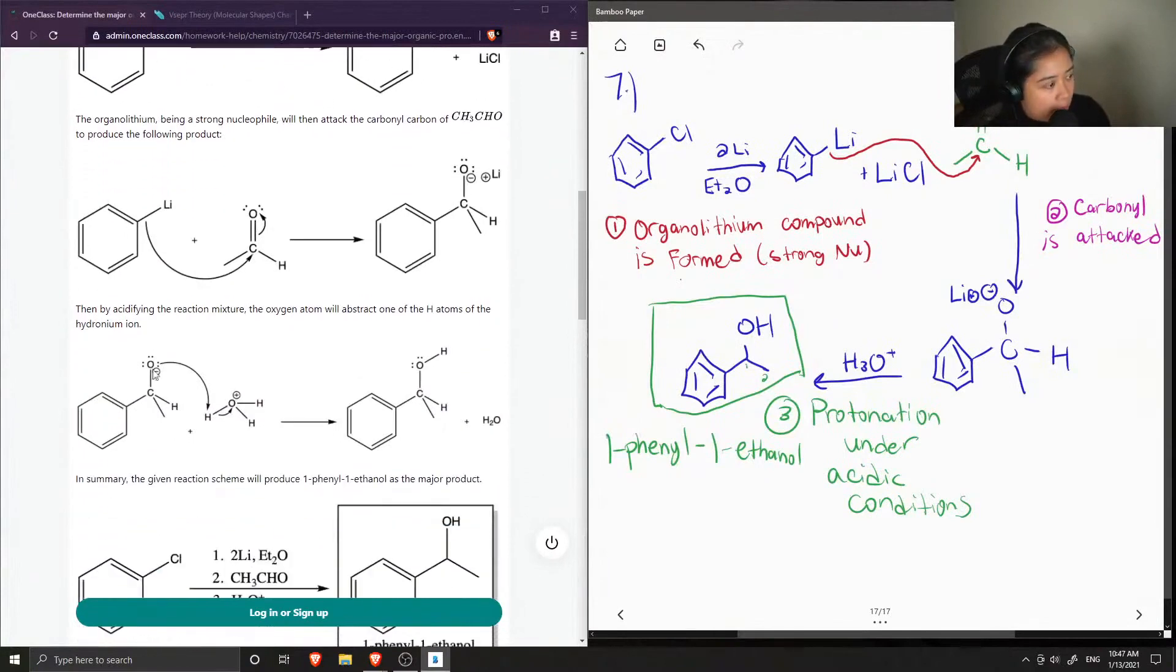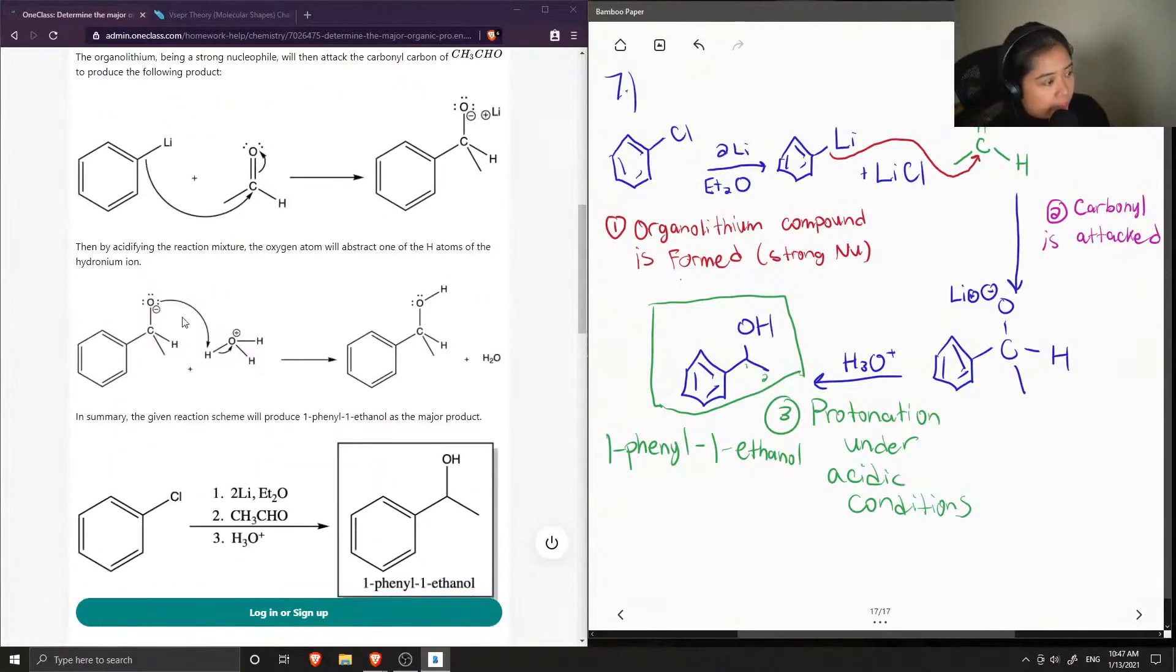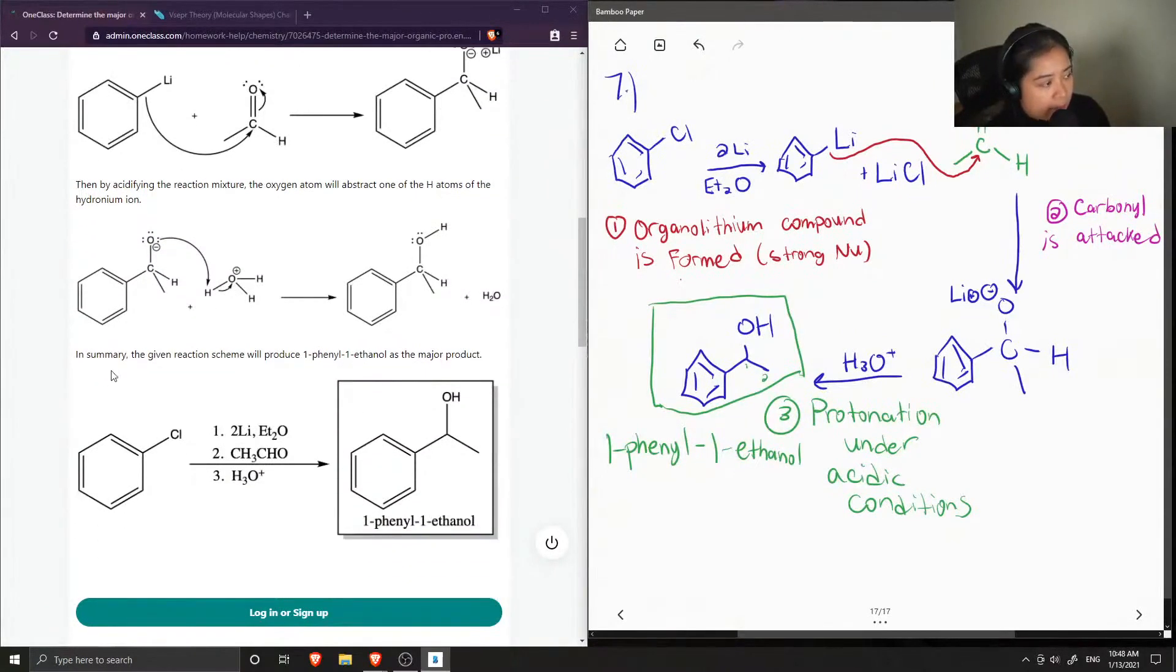Okay, and then next, by acidifying the reaction mixture, the oxygen atom will abstract one of the hydrogen atoms of the hydronium. Okay, so they showed how this will attack one of the protons, making water and our final product.